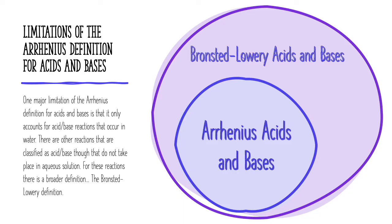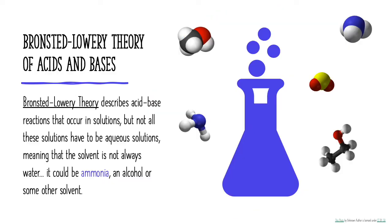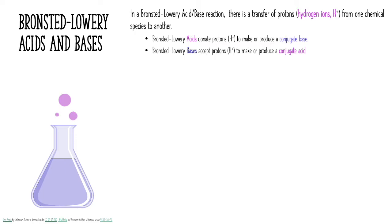So it's fair to say that Arrhenius acids are also Bronsted-Lowry acids, but not all Bronsted-Lowry acids are Arrhenius acids. Bronsted-Lowry theory describes acid-base reactions that occur in solutions, but not all of these solutions have to be aqueous — the solvent is not always going to be water; it could be ammonia, some kind of alcohol, or some other solvent. In a Bronsted-Lowry acid-base reaction, there's a transfer of protons or hydrogen ions from one chemical species to another. A Bronsted-Lowry acid donates protons to make a conjugate base, and a Bronsted-Lowry base accepts protons to make a conjugate acid.